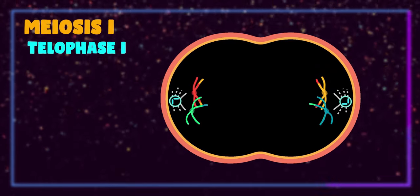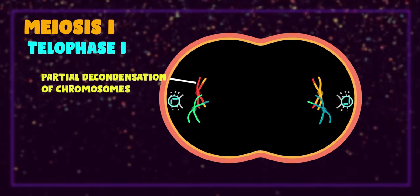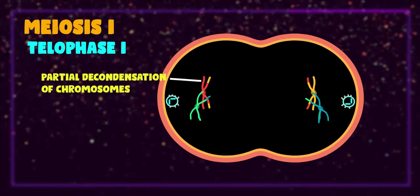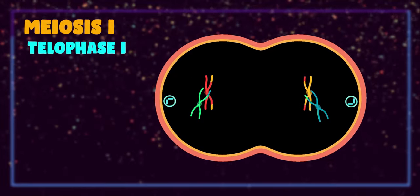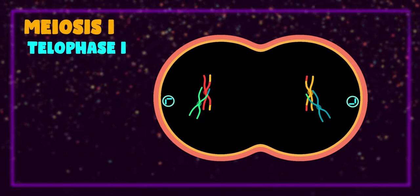After anaphase one, the next stage is telophase one, in which the nuclear envelope and nucleolus reappears. But chromosomes do not undergo complete decondensation and are only partially decondensed.